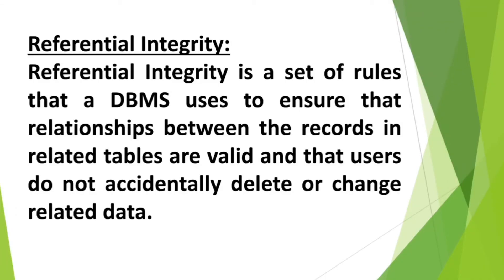Our next topic is Referential Integrity. Referential Integrity is a set of rules that a DBMS uses to ensure that relationships between the records in related tables are valid and that users do not accidentally delete or change the related data. To maintain the relationships between the tables — whether one-to-one or one-to-many — a DBMS software uses some rules, and these rules are applied so that these relationships are maintained and not violated.